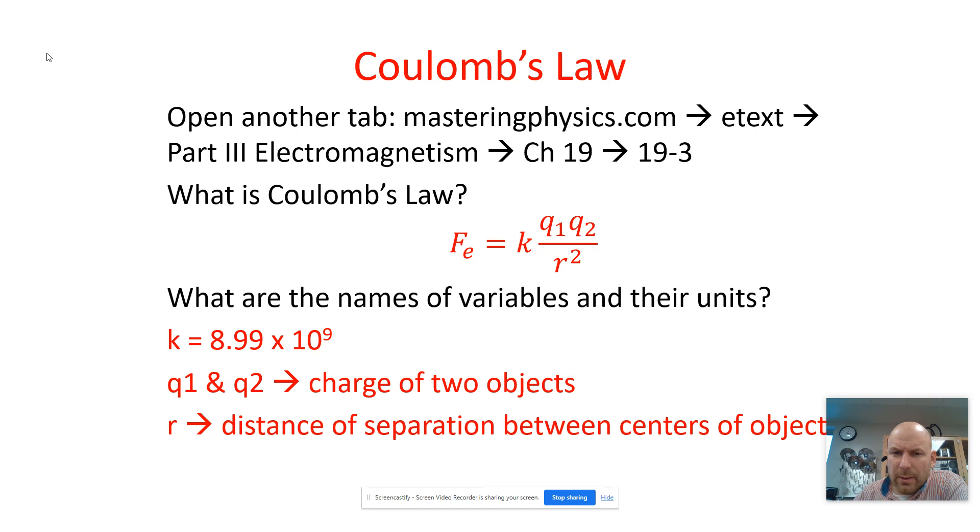So here are the different things. K is a constant, 8.99 times 10 to the ninth. Q1 and Q2 are the charge on two different objects. And r is the distance of separation between the centers of those charged objects.